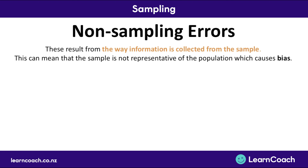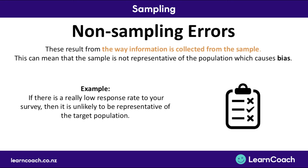Non-sampling errors are very different. These result from the way information is collected from the sample, which can mean the sample isn't representative of the population, causing bias. For example, a really low response rate to your survey makes it unlikely to be representative of your target population. Unlike sampling errors which are due to random chance, non-sampling errors are due to the way information is collected — maybe the survey was complicated, took a long time, or required postage back, so only a small number of people responded.